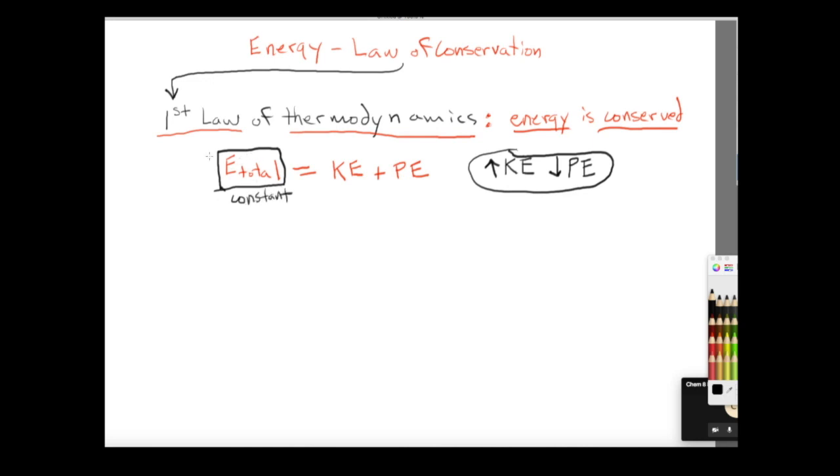This cannot change because if it does, then what that means is that we violated this law. So for any process or chemical reaction, if one of these things is changing, the other one has to be changing also in relation to that in order to maintain constant energy for the entire sum.